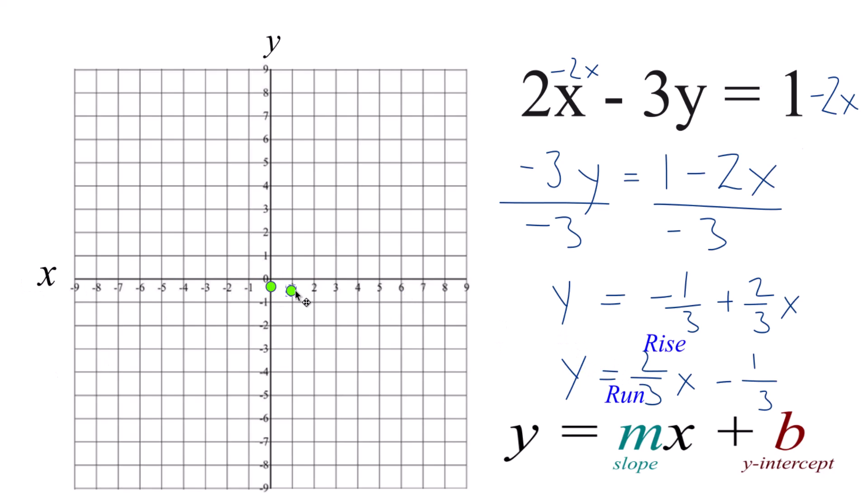So we go up 2 over 3. Up 1, 2, and then over 1, 2, 3. Over here we go up 1, 2, over 1, 2, 3. And you can see these all line up here.